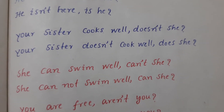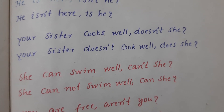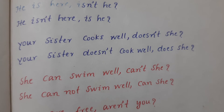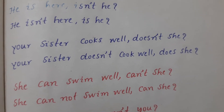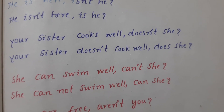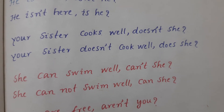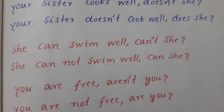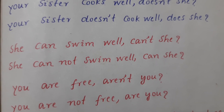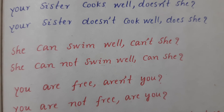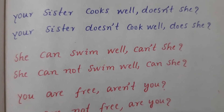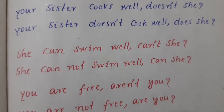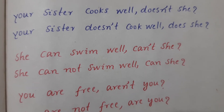One more example: 'Your sister cooks well, doesn't she?' — positive statement, negative tag. 'Your sister doesn't cook well' — negative statement, so question tag is positive. Also: 'She can swim well, can't she?' — positive statement, negative tag. 'She cannot swim well, can she?' — negative statement, positive tag.